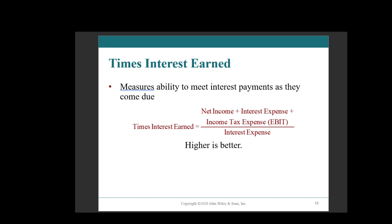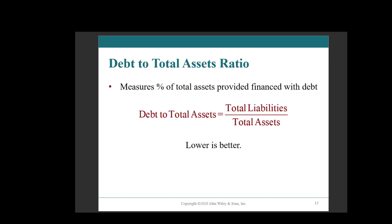Because the debt to total assets ratio is relatively simple, I won't be doing an example here. Just understand this is where you take your total liabilities and divide by your total assets. Lower is typically better, and if you have zero debt, this would be an indeterminable amount — and you would just explain that.